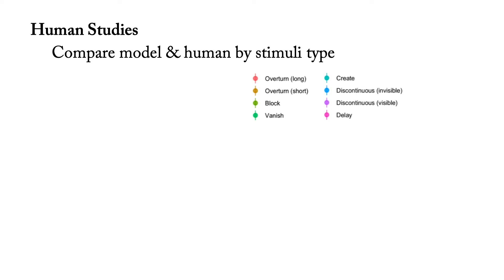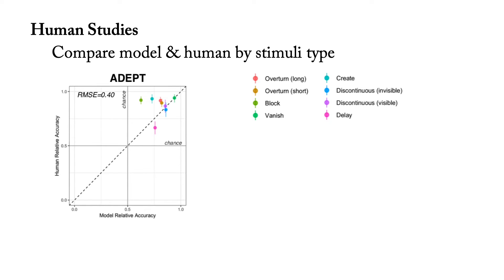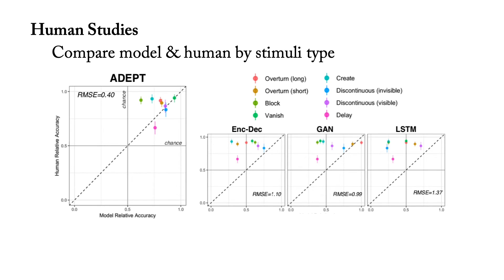We asked people to judge how surprising they found our scenarios. We then compare the relative accuracies of each model to those of humans. While not a perfect match, ADEPT predictions are the closest to humans, with other models deviating by at least twice the root mean square error.